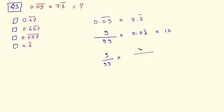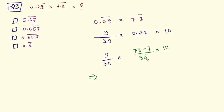The number of recurring digits is 1, so in the denominator I have one 9. The number of non-recurring digits is 1, so I have one 0 in the denominator. Now I will write the number as it is in the numerator — that is 73 minus the non-recurring digits, minus 7. You can cancel out terms here: the zeros get cancelled and the 9s get cancelled. So I have 1 by 99 into 73 minus 7 is 66, giving 66 by 99.